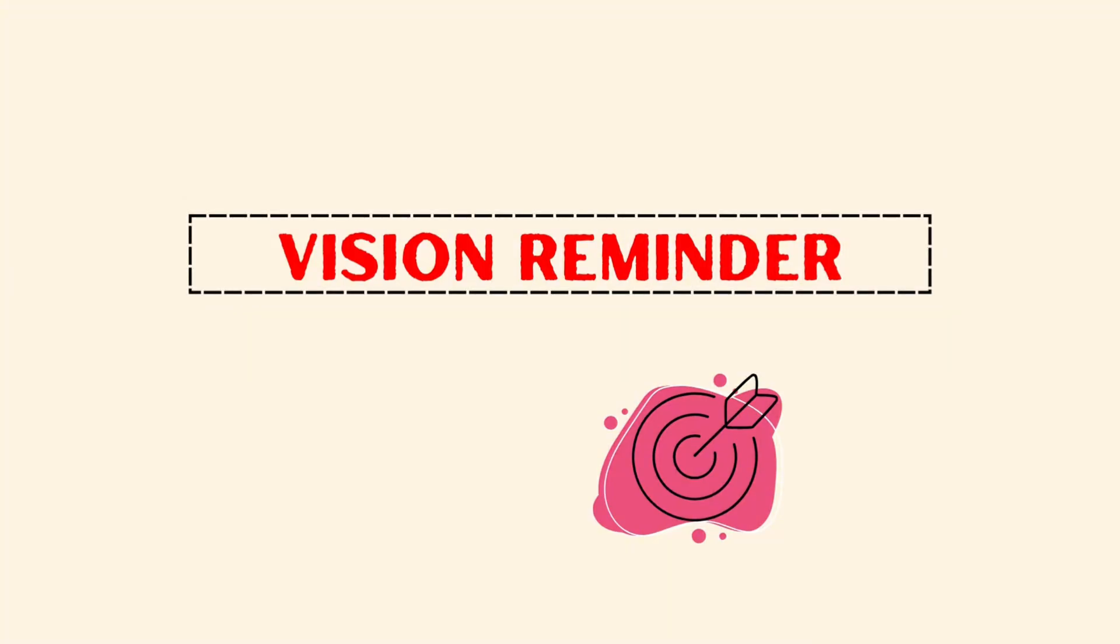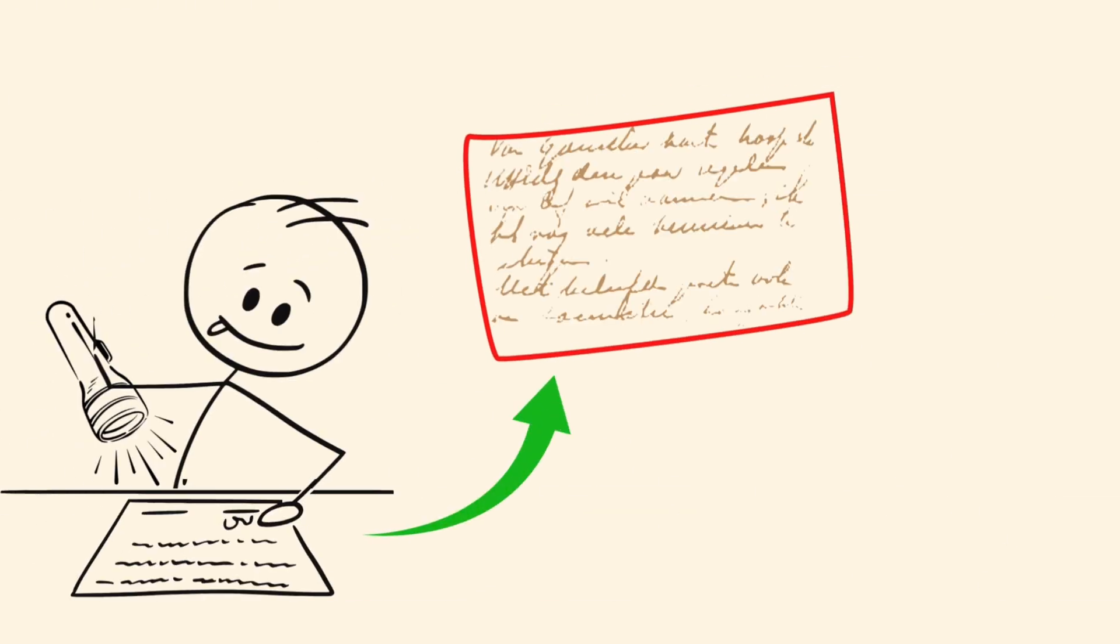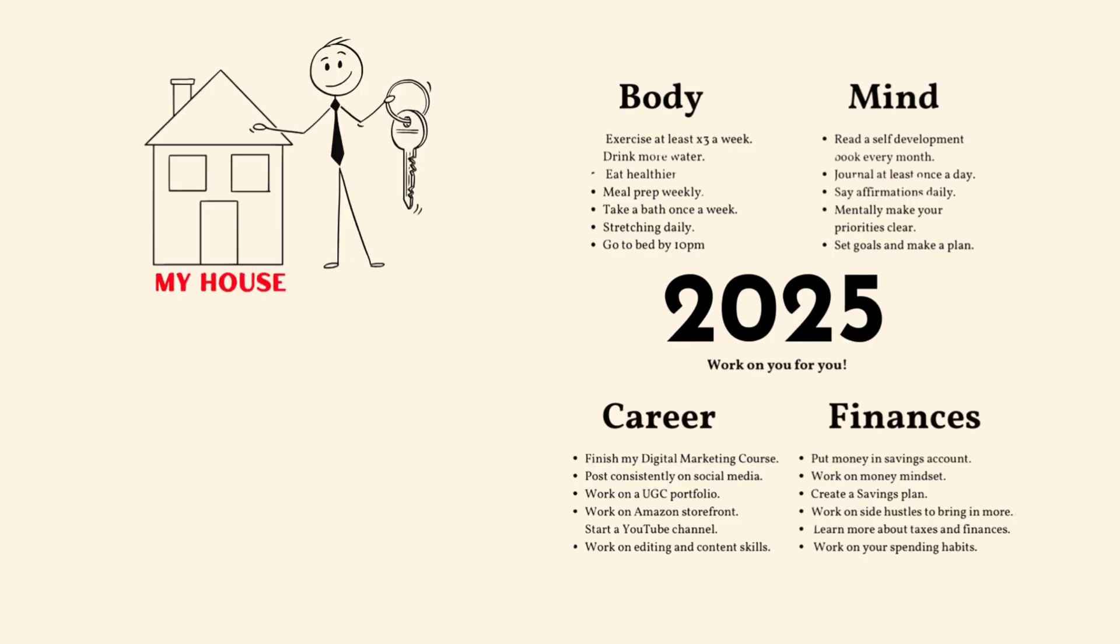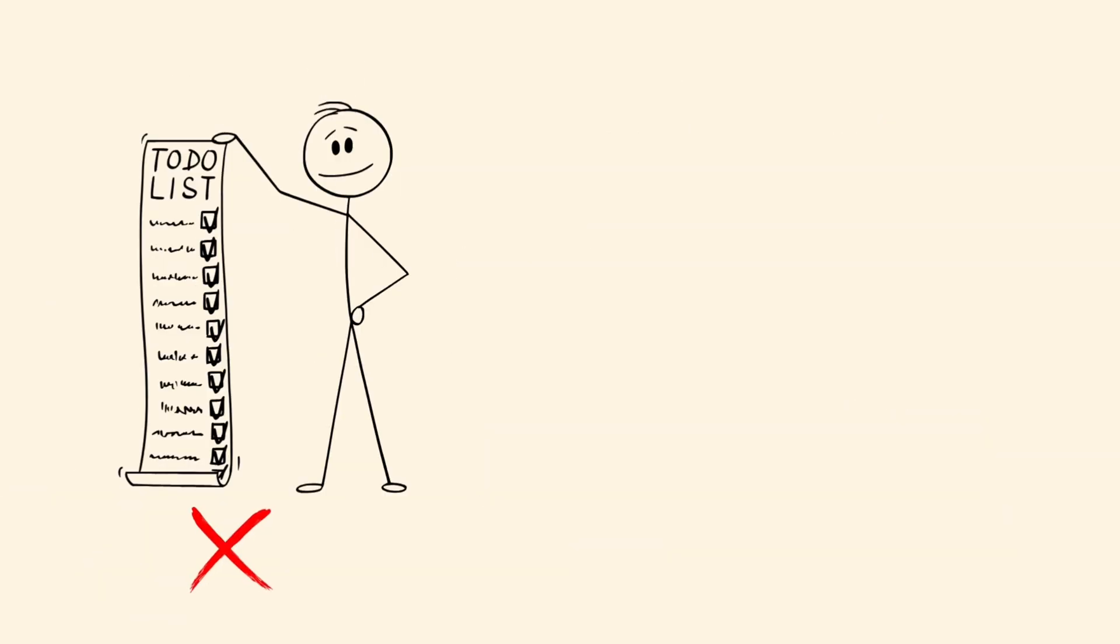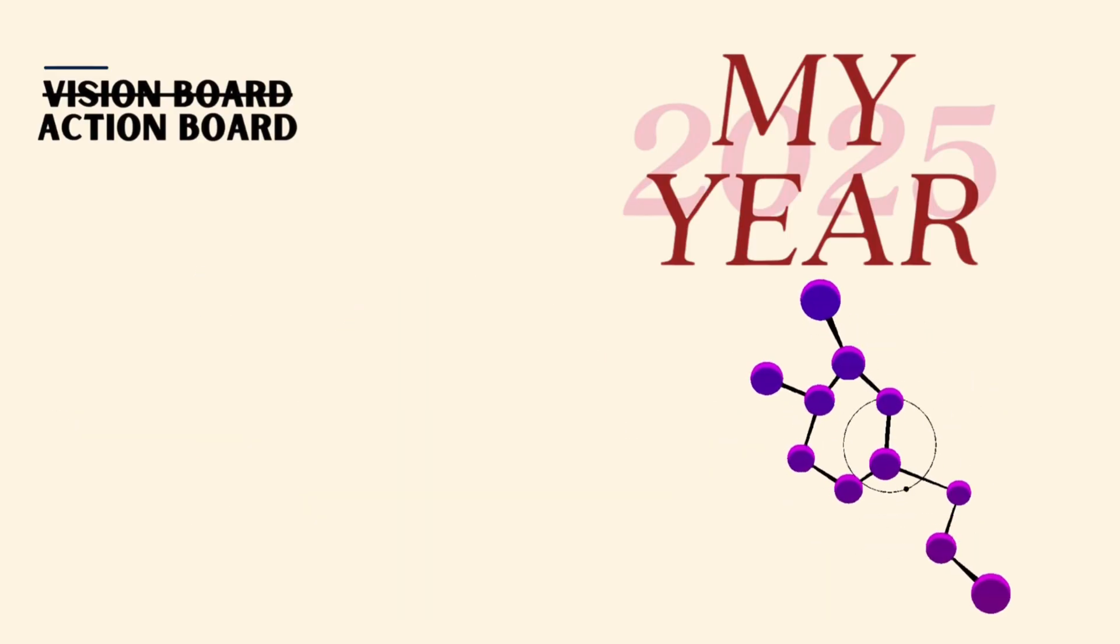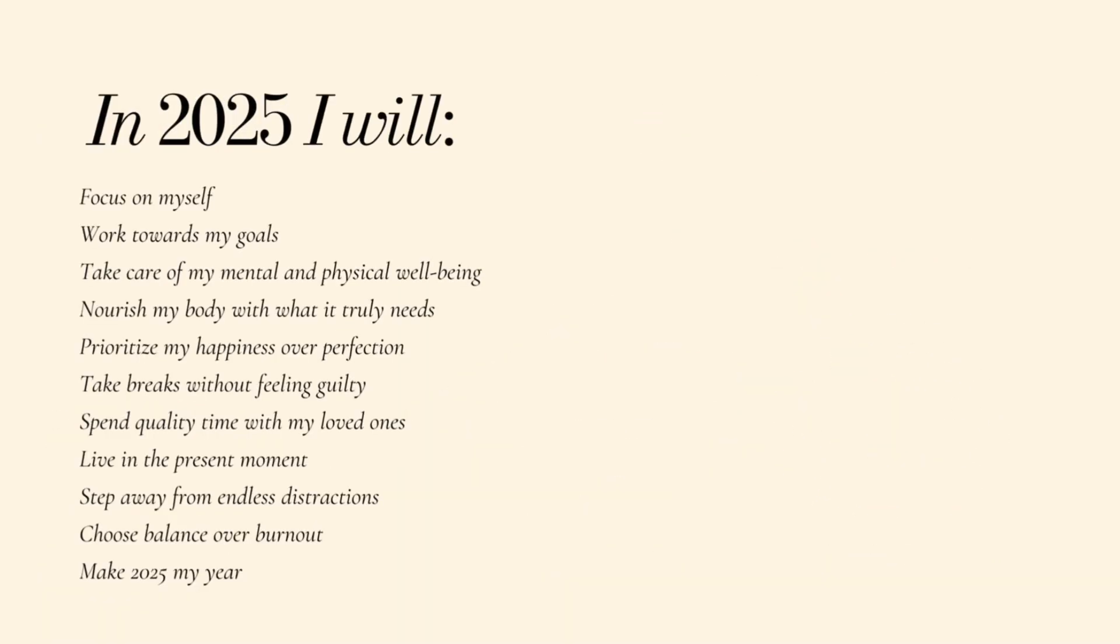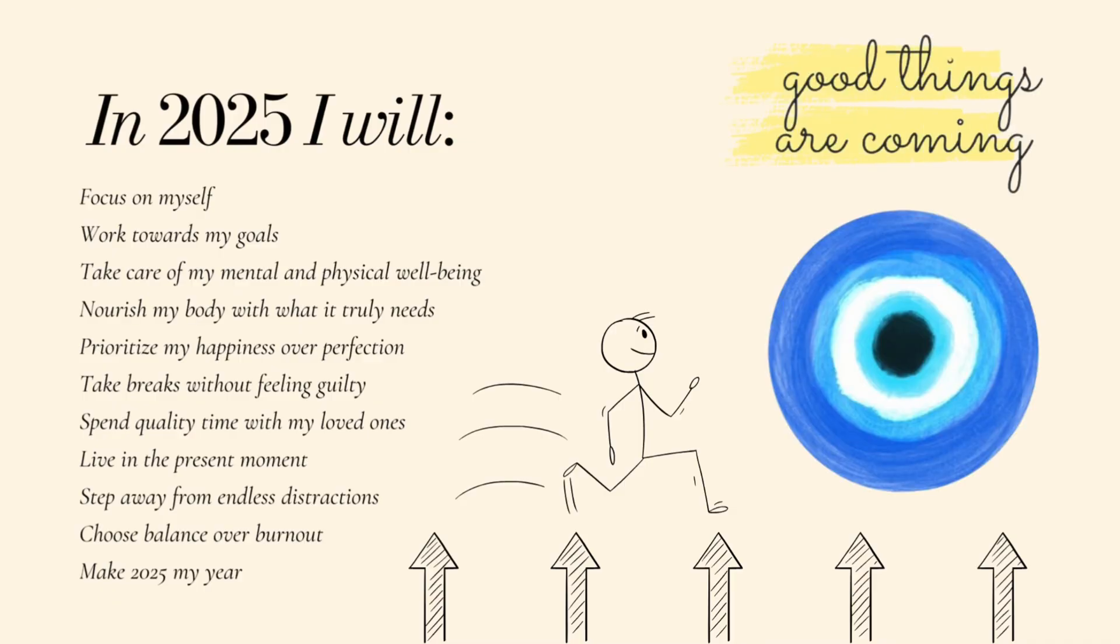Vision reminder. Dopamine with a direction. Every morning, Ethan glances at a handwritten note above his desk. A simple sentence. His long-term vision. Not a to-do list. Not a KPI. A vision. Because without it, your brain's dopamine system chases meaningless short-term wins. With it, every effort feels like building towards something meaningful.